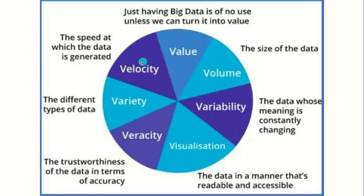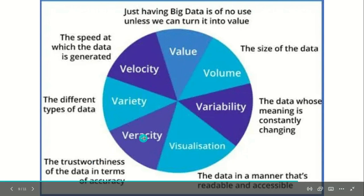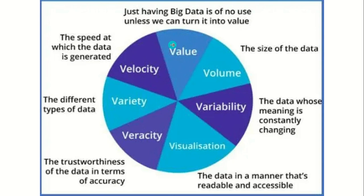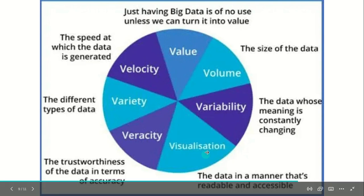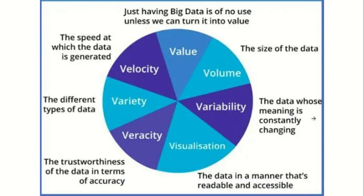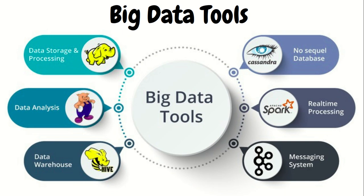To summarize the V's of big data: Velocity — the speed at which data is generated; Variety — different types of data; Veracity — trustworthiness of data; Value — big data is of no use if we can't turn it into value; Volume — the size of data; Variability — data whose meaning constantly changes depending on context; Visualization — presenting data in a manner that's readable and accessible.